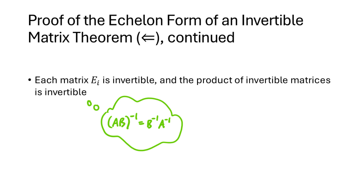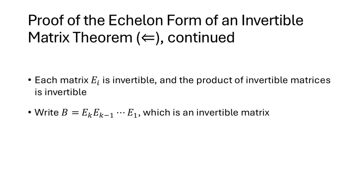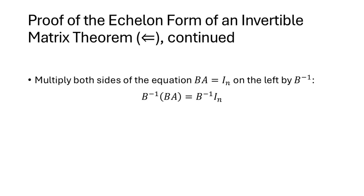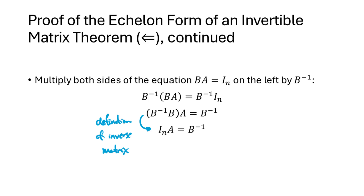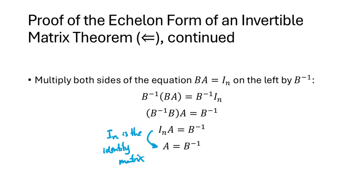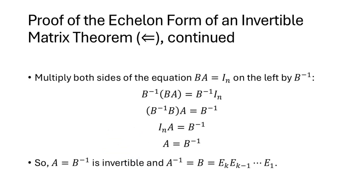Call the product of all those E matrices B — it's invertible as a product of invertible matrices. We know B times A equals I_n. Multiplying both sides on the left by B inverse (and noting matrix multiplication is not commutative, so we must specify left multiplication), we get B inverse times B times A equals B inverse, which simplifies to A equals B inverse. That means B equals A inverse, so A inverse exists.